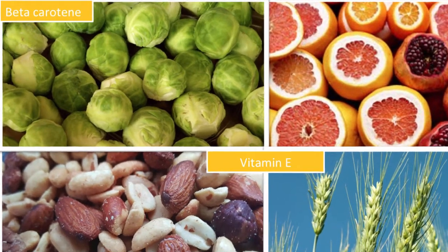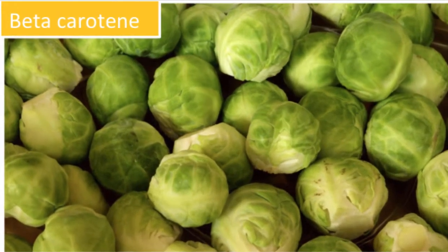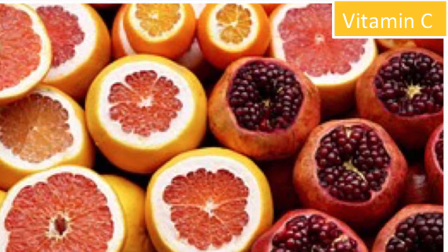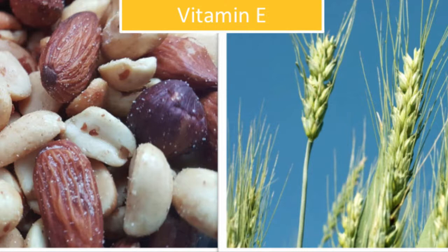Beta-carotene, which is a part of vitamin A, is found in Brussels sprouts, sweet potatoes, spinach, tomatoes, and carrots. Vitamin C is found in blueberries, pomegranates, broccoli, citrus fruits, and sweet peppers. And finally, vitamin E is found in nuts, seeds, margarine, oils, wheat germ, whole grain products, and it can be added to commercially bought salad dressing.